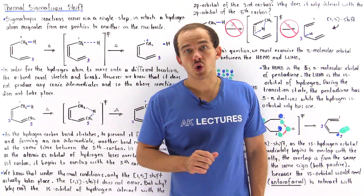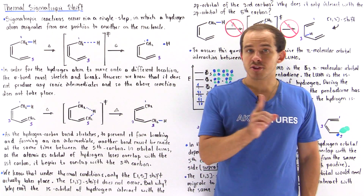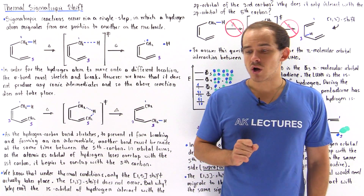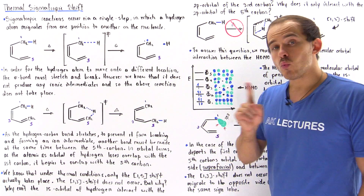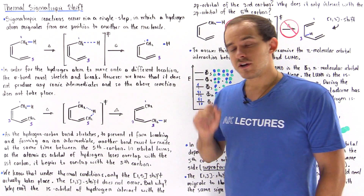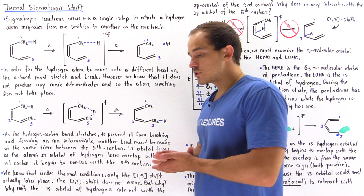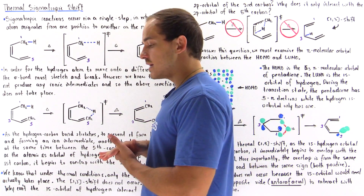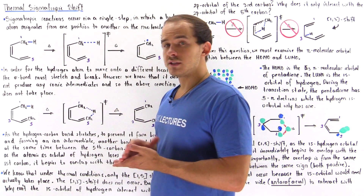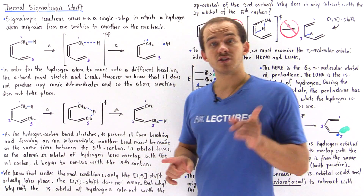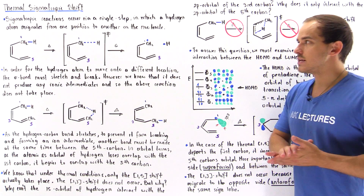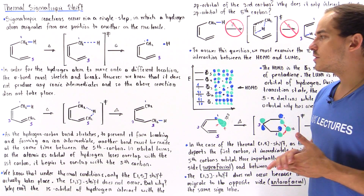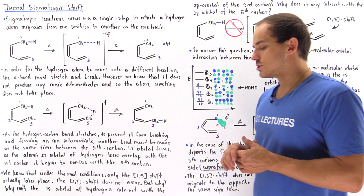In this lecture, we're going to discuss thermal sigmatropic shifts and why the 1,5 sigmatropic shift takes place under thermal conditions and why the 1,3 shift does not take place under thermal conditions.